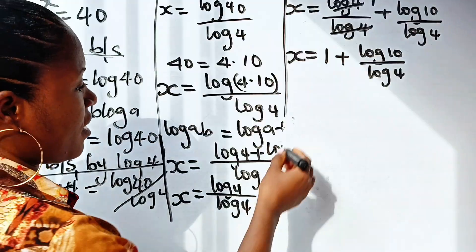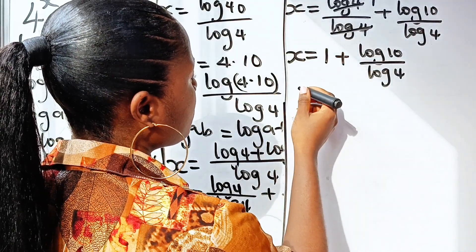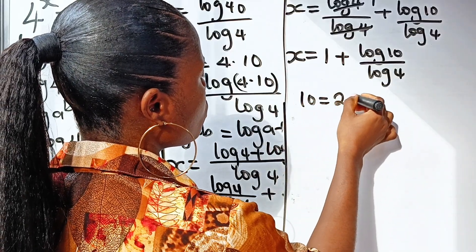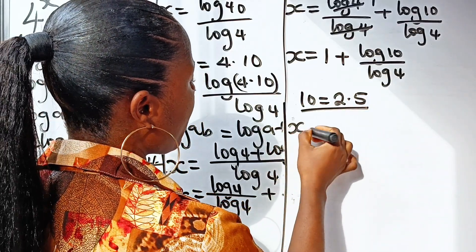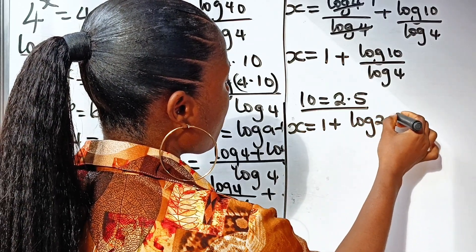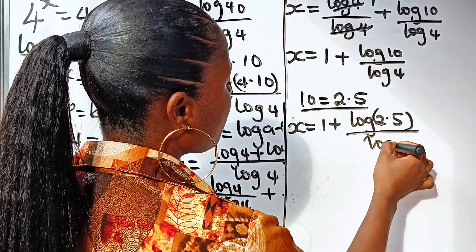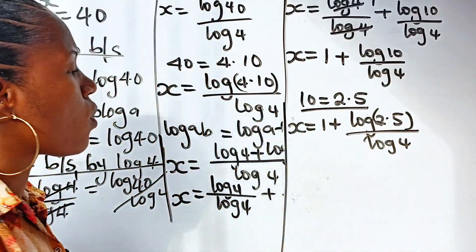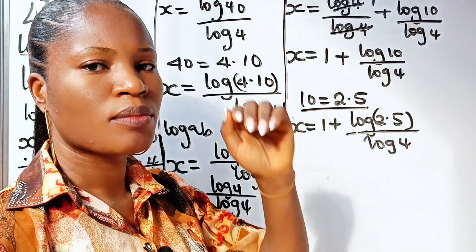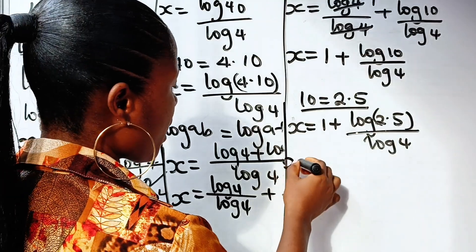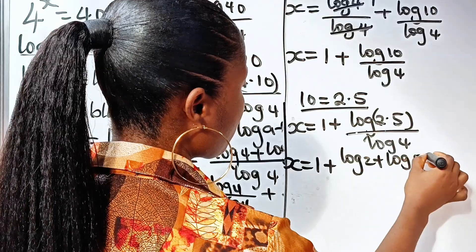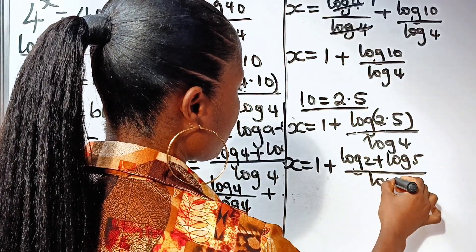Please ignore the shadow. Now note that 10 is equal to 2 multiplied by 5. So we have x is equal to 1 plus log(2 × 5) divided by log 4. We apply the rule that log(ab) is equal to log a plus log b, so we can write x is equal to 1 plus log 2 plus log 5, divided by log 4.